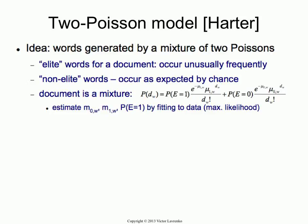A guy named Harder came up with a two-Poisson model. The idea is that a single Poisson doesn't fit, so we're going to use two Poissons — one for the head and one for the tail. It's a nice idea that works in many domains. For each document we're going to have two sets of terms: elite terms, which are words that occur unusually frequently in this document — words that usually should be very infrequent but for some reason are frequent in this particular document.